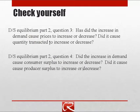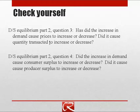Hopefully the first part is pretty easy: did the increase in demand cause prices to increase or decrease, and did it cause quantity transacted to increase or decrease? You should be able to read those off the previous graph by looking at where the new intersection of supply and demand is compared to the old one. A little trickier is the second question: did the increase in demand cause consumer surplus to increase or decrease, and did it cause producer surplus to increase or decrease? You'll have to do a little math by plugging in the new equilibrium price and recalculating consumer and producer surplus.